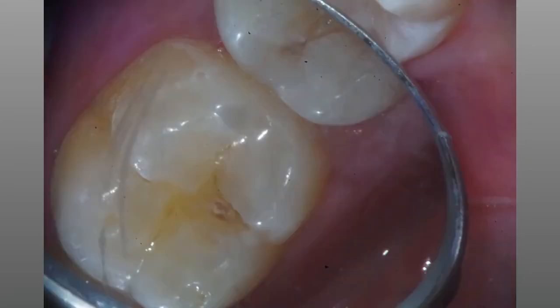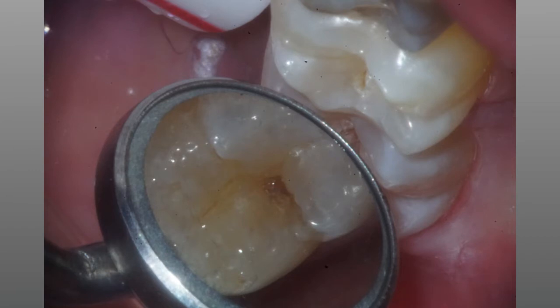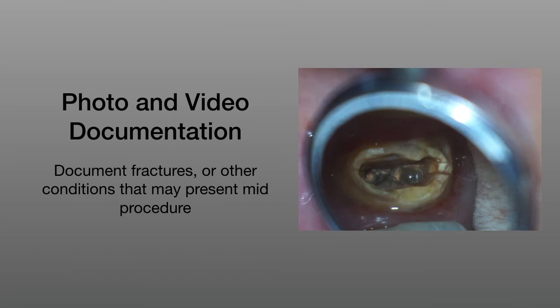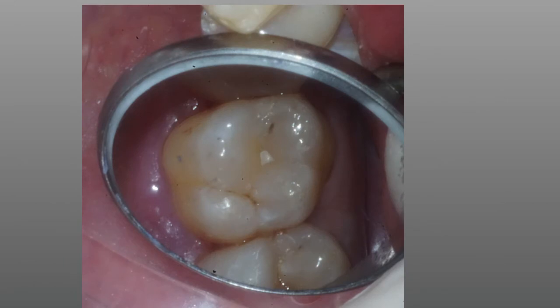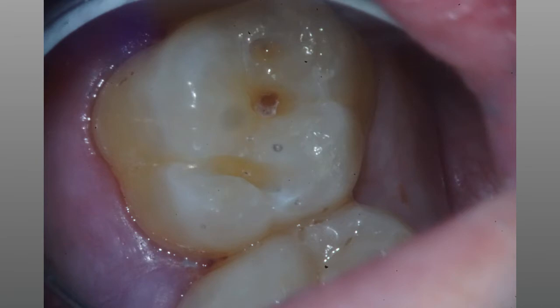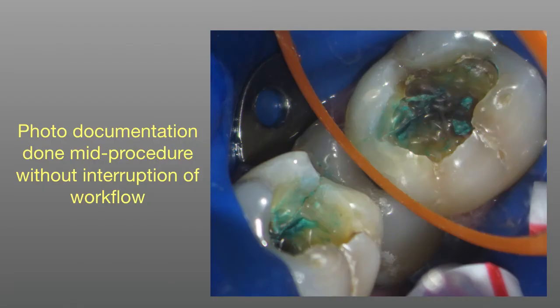From the beginning of the procedure to mid-procedure, you can take photos to communicate with the patient, to document things for insurance, or for educational purposes. We can document fractures or other conditions that may present mid-procedure. We see some occlusal decay and a suspicious sealant. We can document the procedure as we go — remove the sealant, see demineralized enamel, clean the enamel, and see that the decay has perforated the enamel and infected the dentin. This photo documentation done mid-procedure, without interruption of the workflow, is a key benefit.